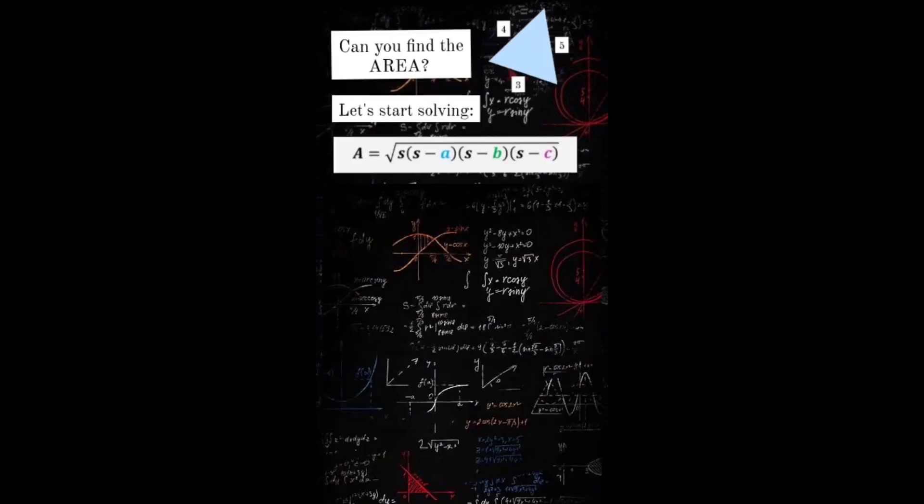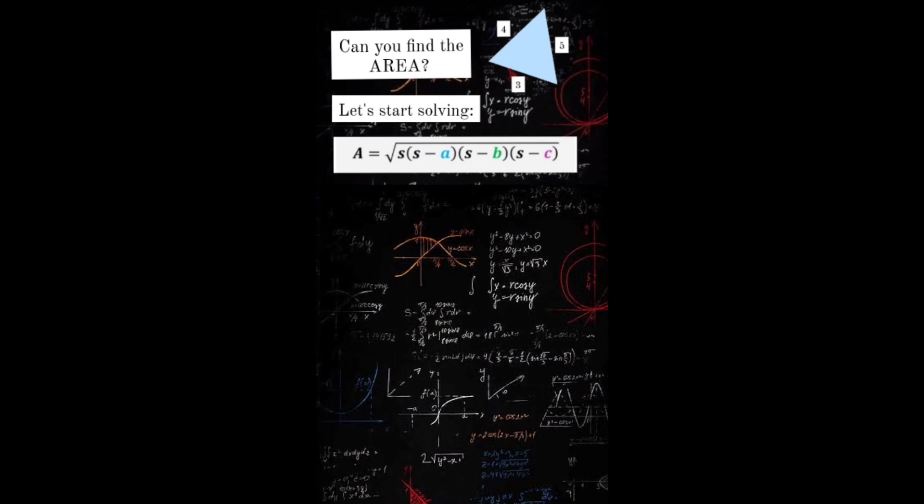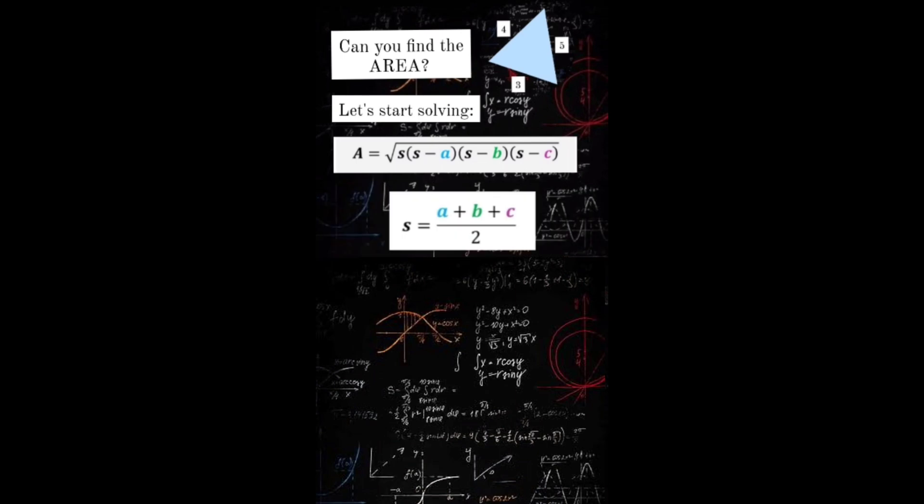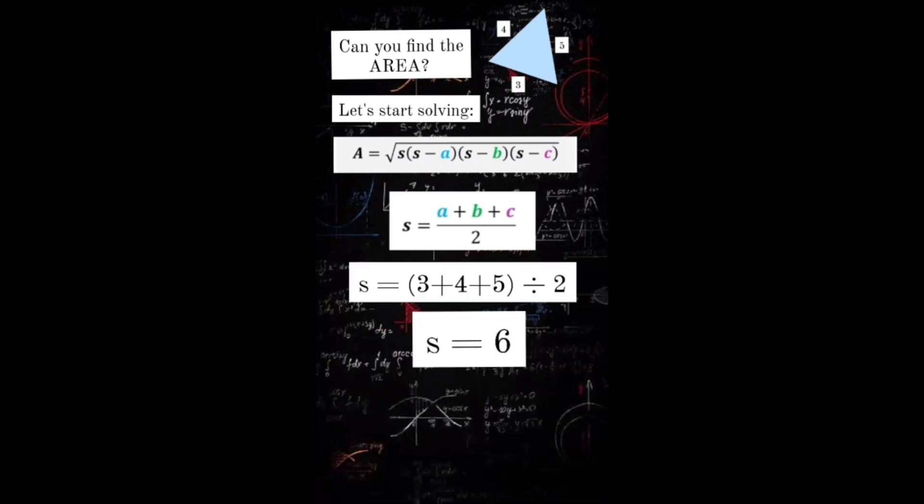Let's start solving. First, write the formula. Second, substitute the given. To find S, we need to add the given sides and divide the result by 2. By adding the three sides, you will get the perimeter. By dividing it by 2, you will get the semi-perimeter. 3 plus 4 plus 5 divided by 2 is 6. Therefore the semi-perimeter is 6.